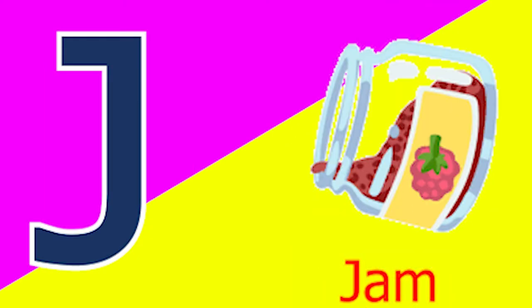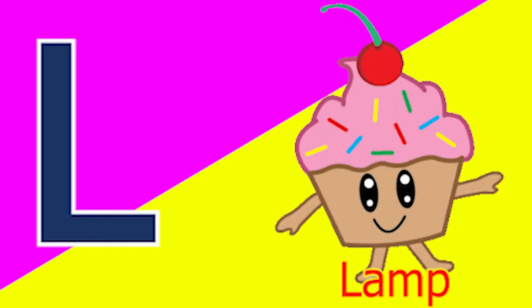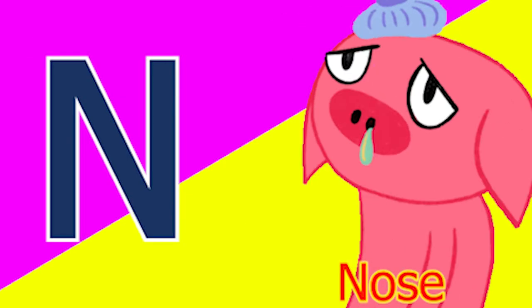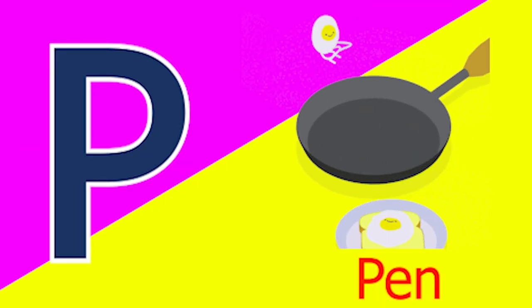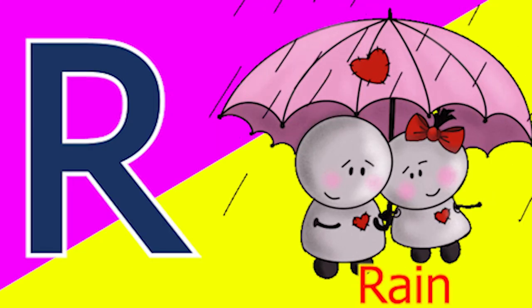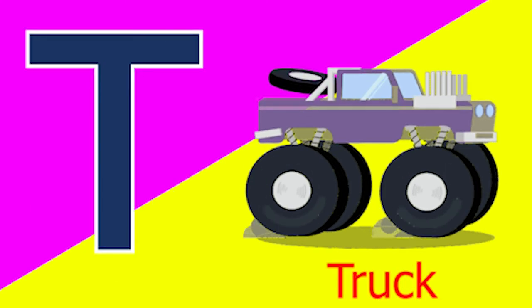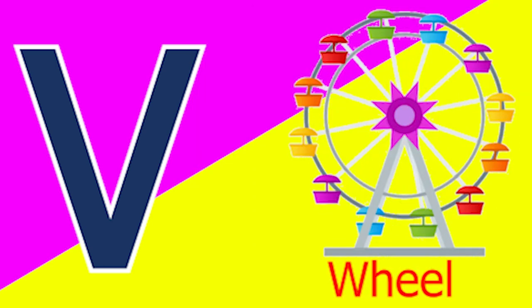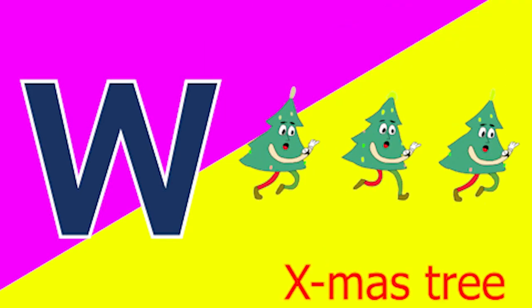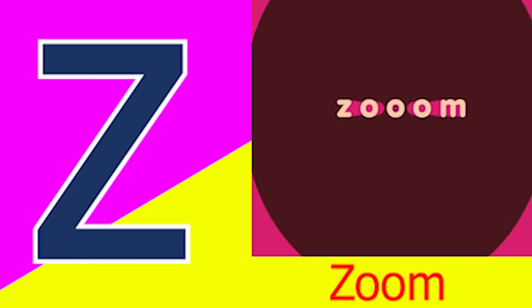J for jam, K for TV, L for lamb, M for mud, N for nose, O for ox and P for ban. U for quack and R for rain, S for sheep and T for top, U for utensil, B for ban, W for wheel and X for x plus tree, Y for yacht and Z for zoom.